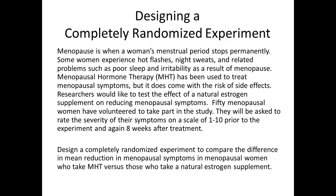Let's talk about designing a completely randomized experiment. Here's the scenario: menopause is when a woman's menstrual period stops permanently. Some women experience hot flashes, night sweats, poor sleep, and irritability as a result. Menopausal hormone therapy (MHT) has been used to treat menopausal symptoms but comes with a risk of side effects. Researchers would like to test the effect of a natural estrogen supplement on reducing menopausal symptoms. Fifteen menopausal women have volunteered; they will rate symptom severity on a scale of 1 to 10 prior to the experiment and again 8 weeks after treatment. The goal is to compare the mean reduction in menopausal symptoms between women who take MHT versus those who take the natural estrogen supplement.